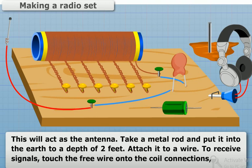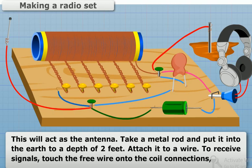Take a metal rod and put it into the earth to a depth of 2 feet. Attach it to a wire to receive signals.